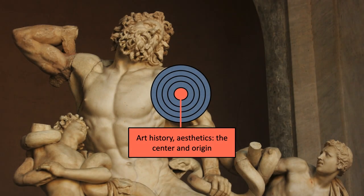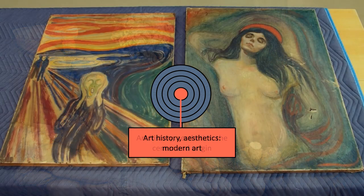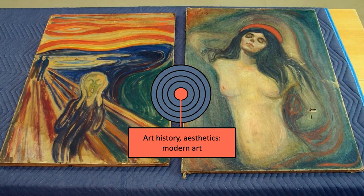It's kind of like a target metaphor. Starting from the center, at the center of the target would be traditional art history and also aesthetics — so classical Greek and Roman sculpture to stand for that. Very European, very mainstream, center-of-the-target kind of stuff. Still in the bullseye, which is art history and aesthetics, is the study of modern art.